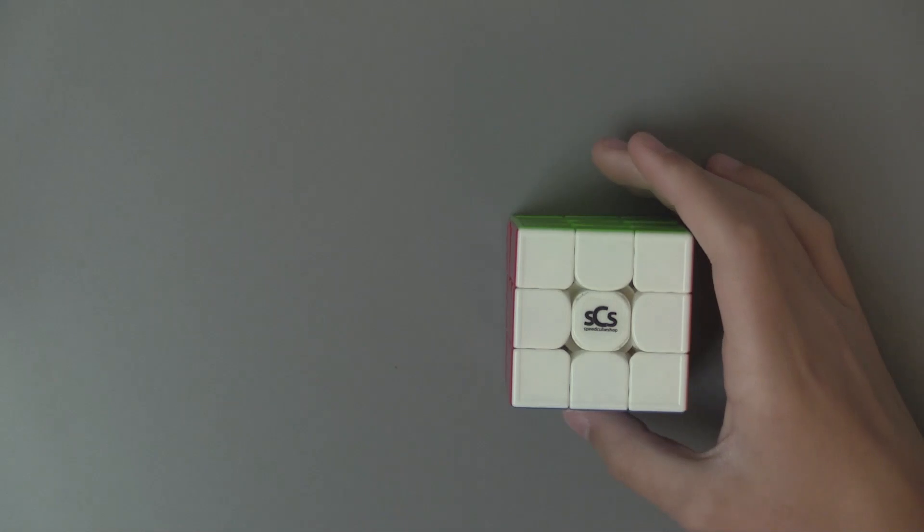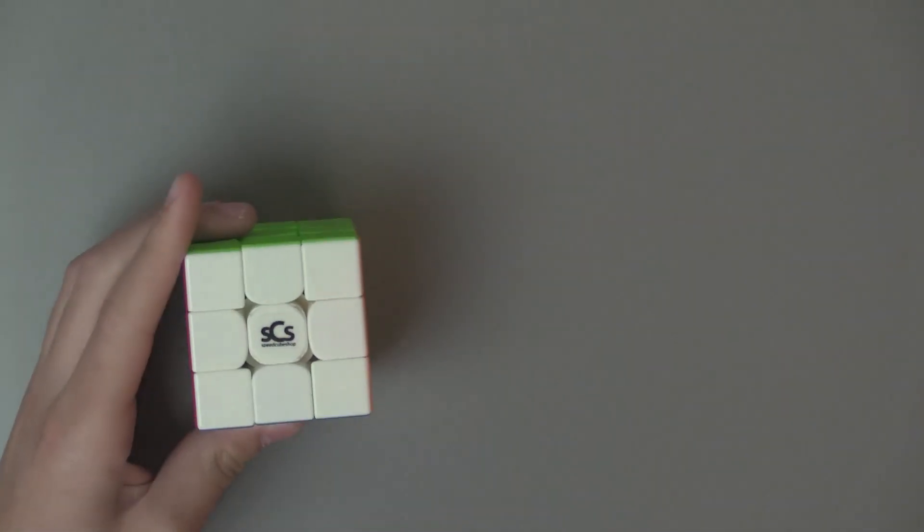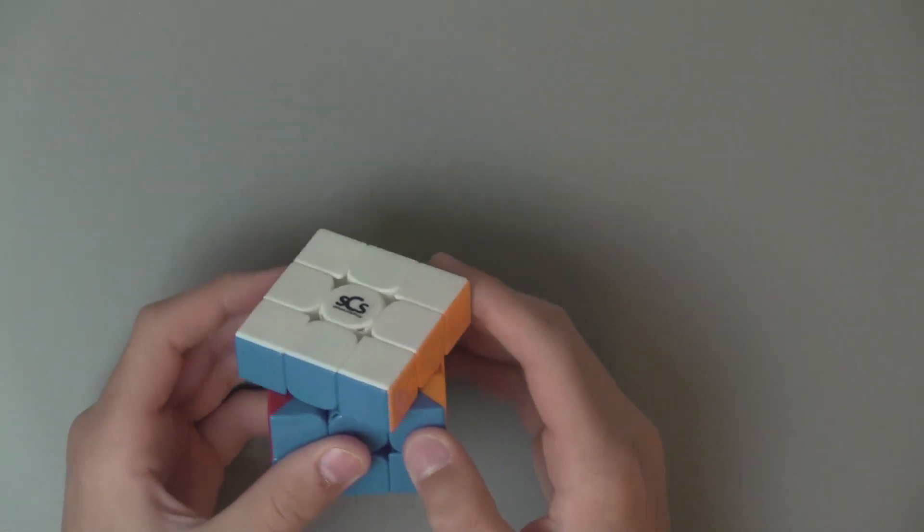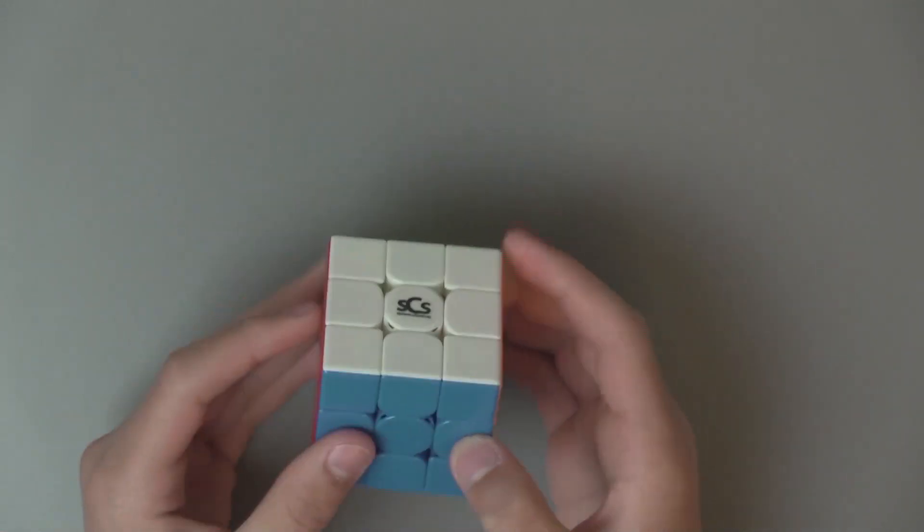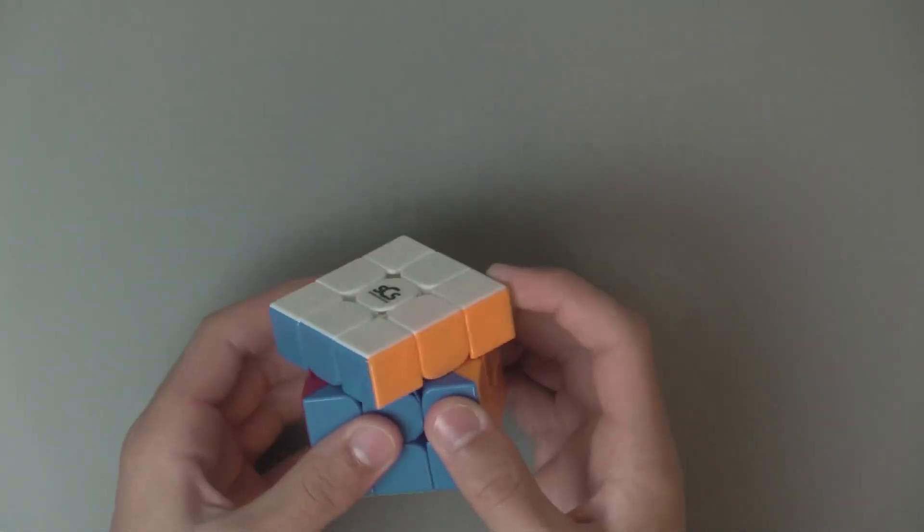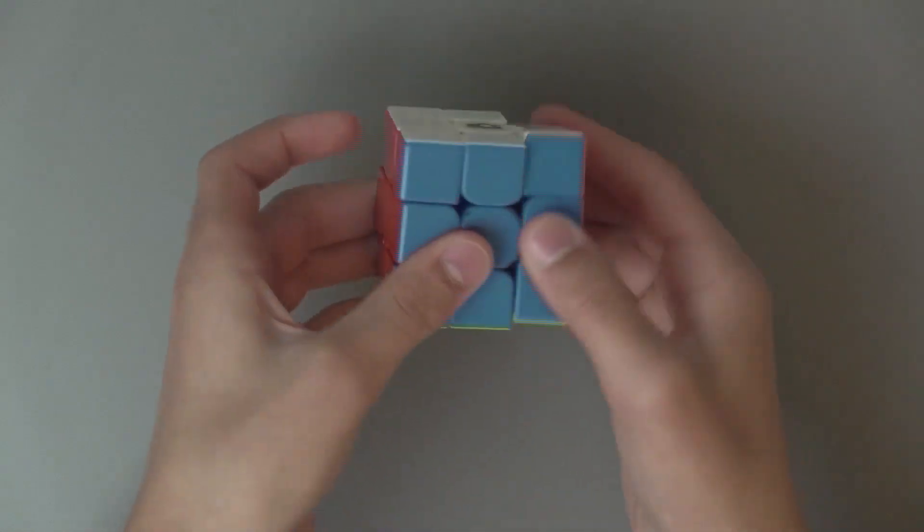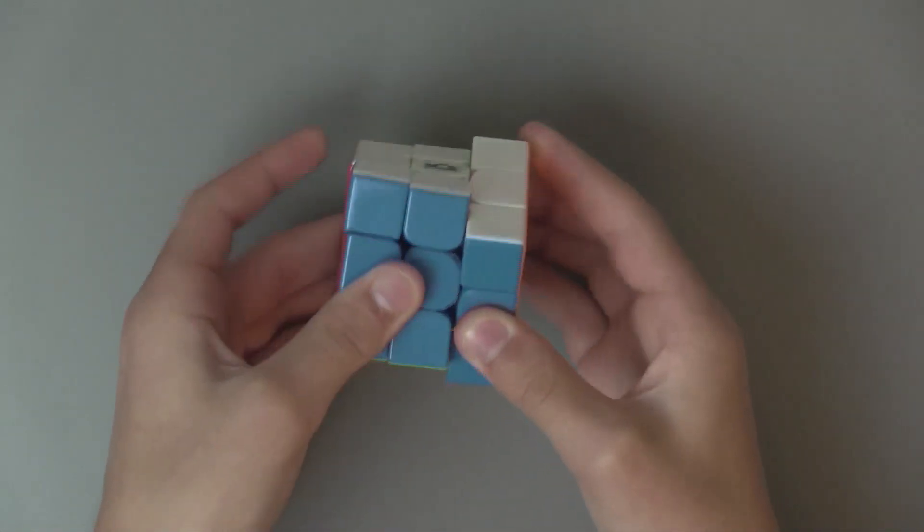Next up, corner cutting. So, out of the box, the WRM's corner cutting couldn't even go 45 degrees with how tight it was. But after loosening it up a bit, it can now go almost two pieces, and then reverse, it can go almost a whole piece.